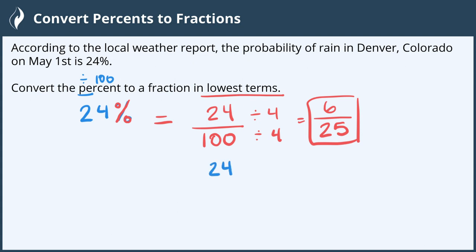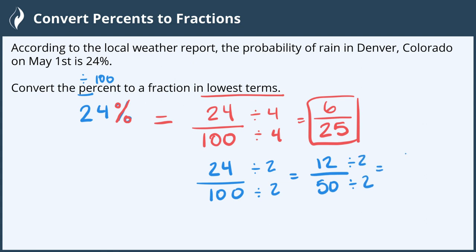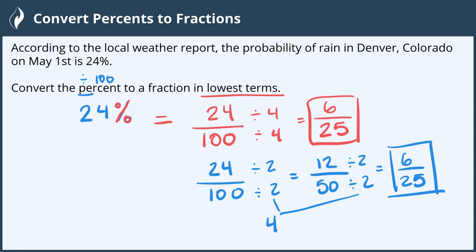If you're not comfortable finding the greatest common divisor for the numerator and the denominator, you can simply see that both of them are even and divide by 2. 24 divided by 2 is 12. 100 divided by 2 is 50. And again, you can see that both of these are even, which means you can divide them both by 2 again, giving us 6 and 25. You'll also notice that 2 and 2 multiplied together is 4, so you did divide by 4 just in a roundabout way.